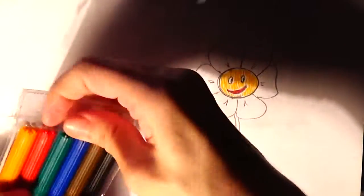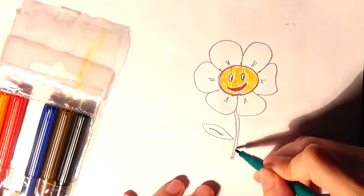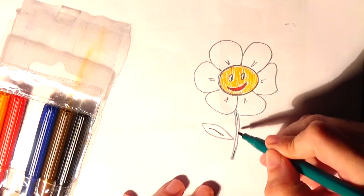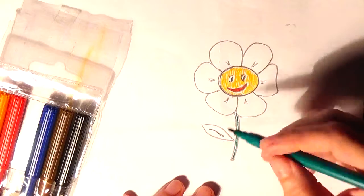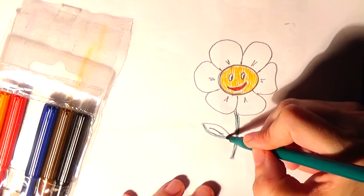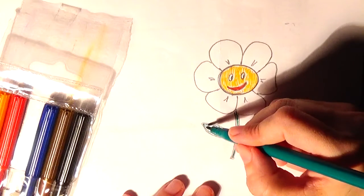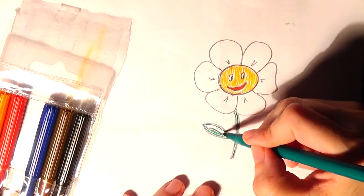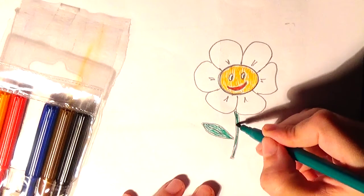We should use these colors again. But first, let's draw the stem and let's make this leaf also green.